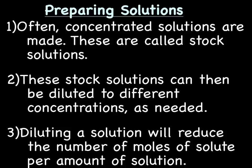So you take this high concentration solution, we can talk about the orange juice, or maybe a salt solution, like an NaCl solution. It's a really, really high concentration, and we dilute it to the concentration we want when we want to use it. So diluting a solution will reduce the number of moles of solute per amount of solution, because we're adding more solvent.